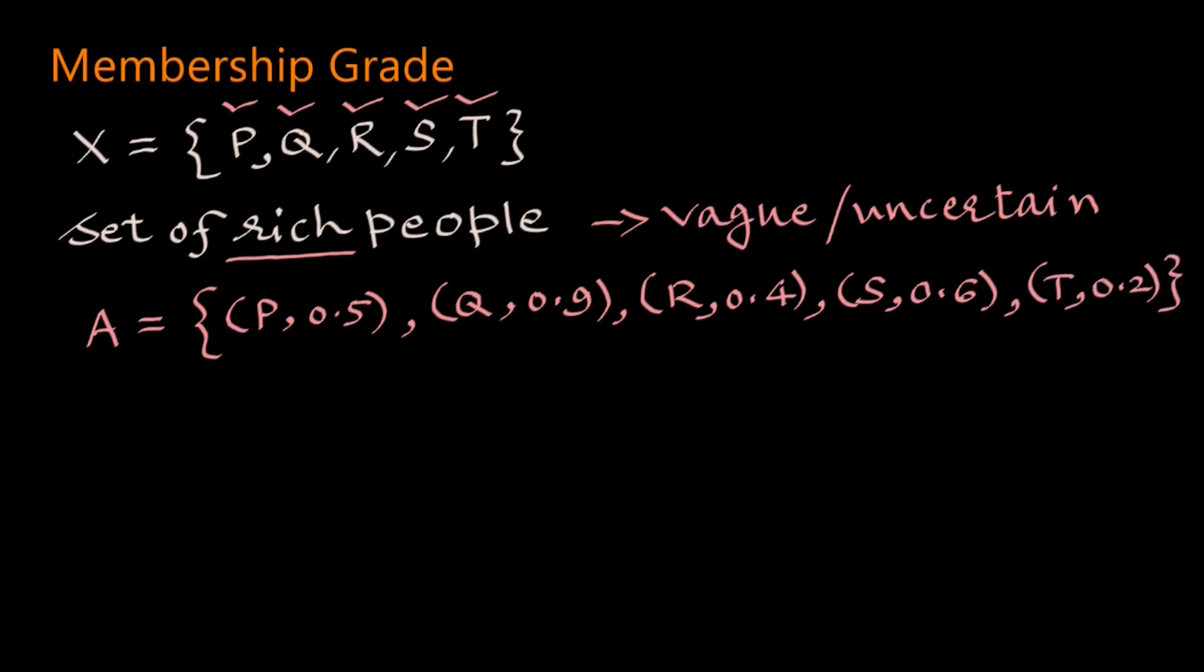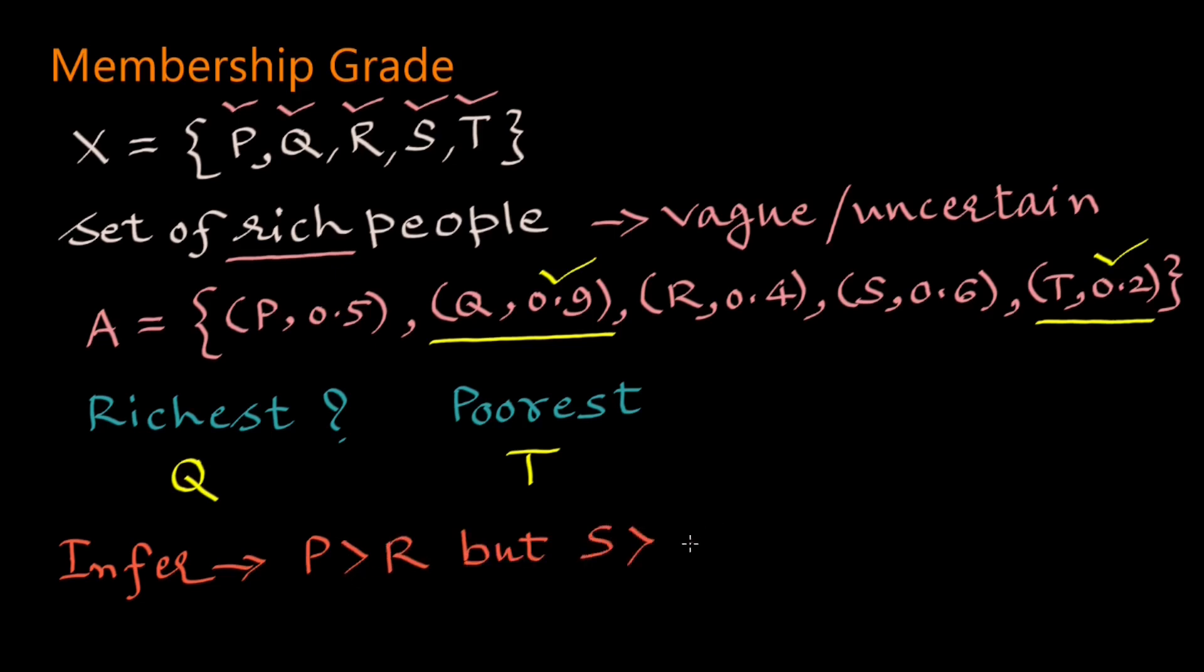Now we have to decide who among them is the richest and who the poorest. From the membership grade we can easily decide Q is richest having the highest membership grade and T the poorest having the least membership grade. We also can infer that P is richer than R but S is richer than P and S is richer than both P and R.